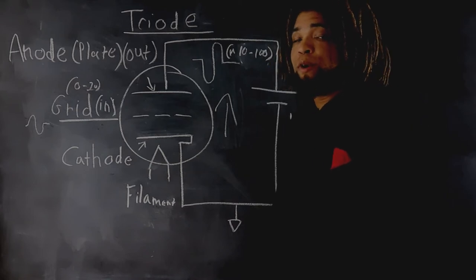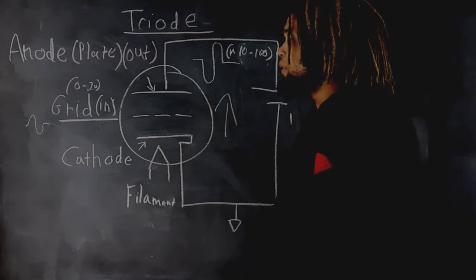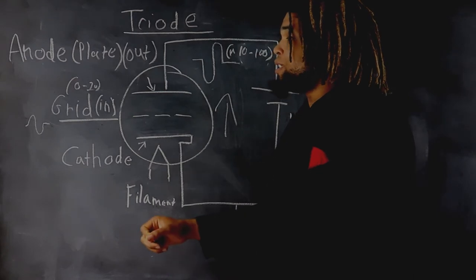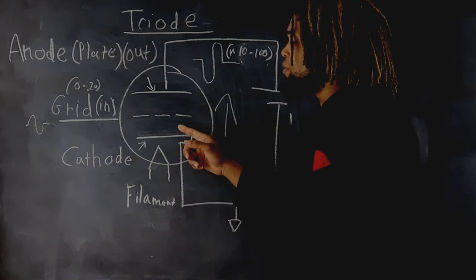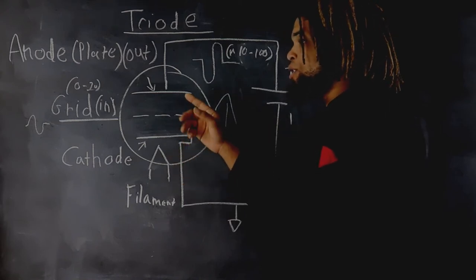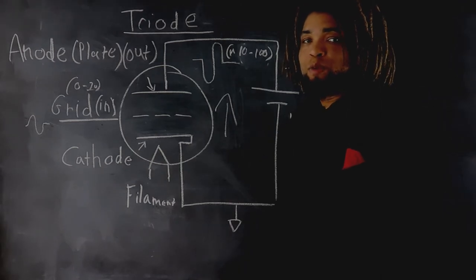This is because if the grid goes too negative, it will cut off the flow of electrons from the cathode to the plate. Conversely, if it is too positive, it will let too many electrons flow from the cathode to the plate, then saturating the vacuum tube.